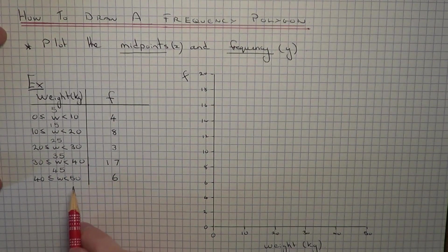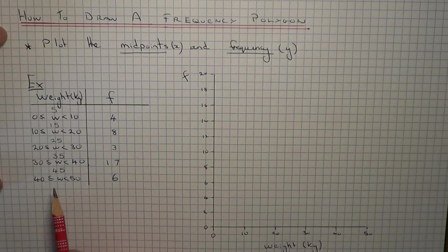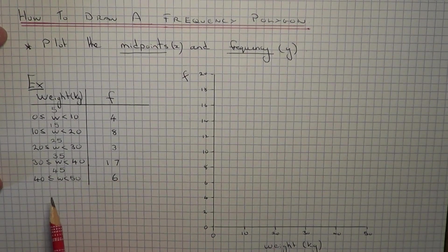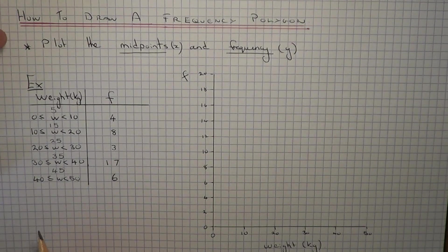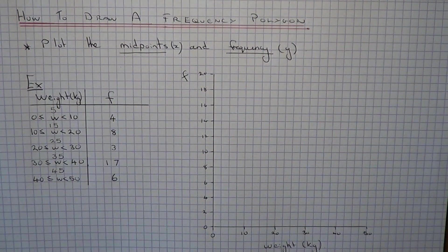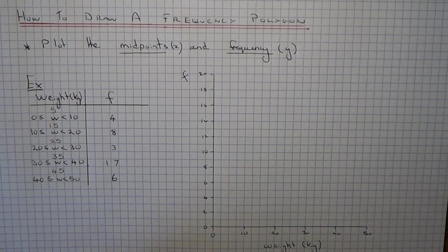If you are having trouble finding the midpoint, you can always add the two numbers up and half the answer and that will give you the midpoint. So once we have got our midpoints we can now draw the frequency polygon.